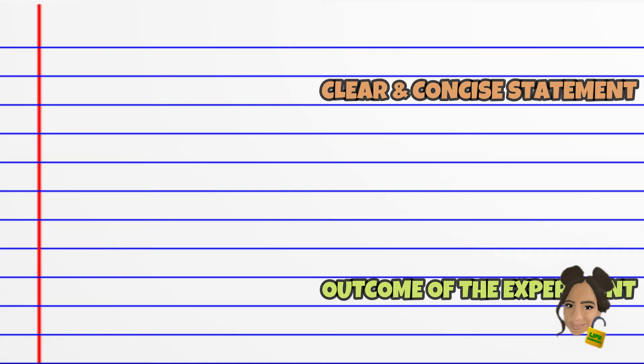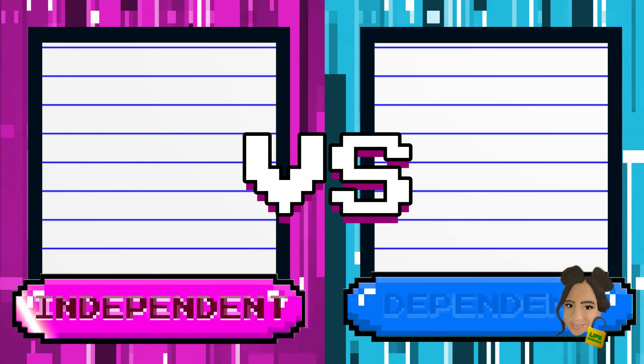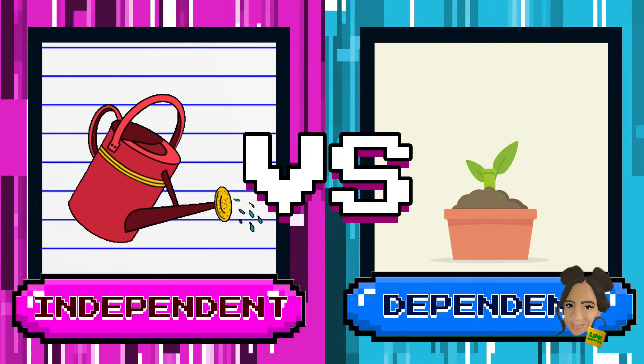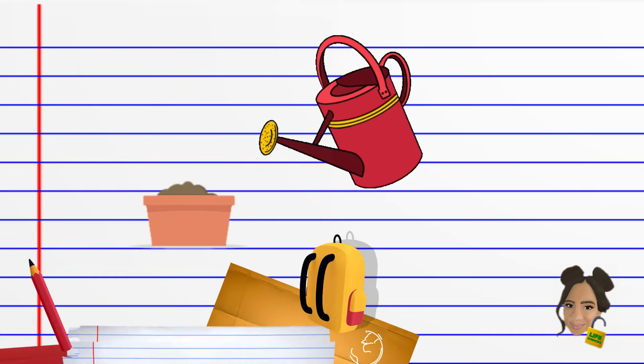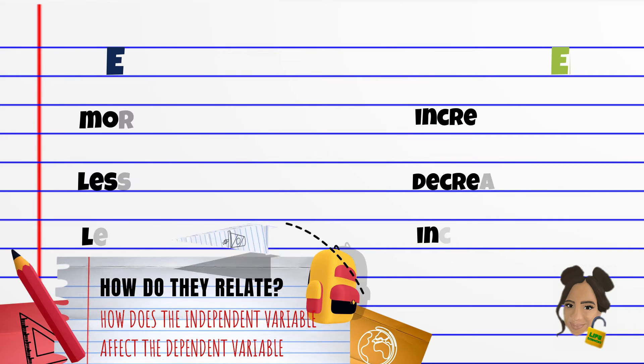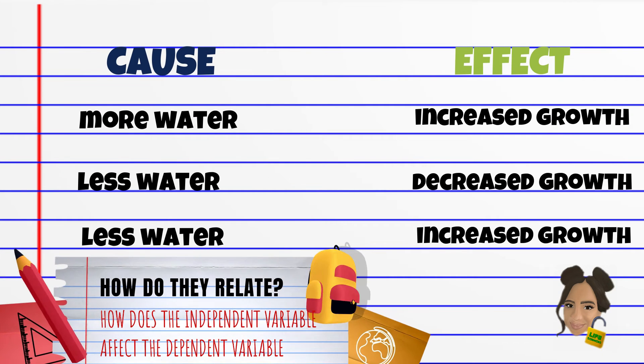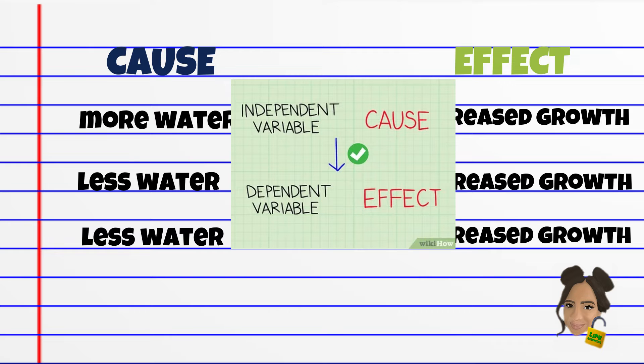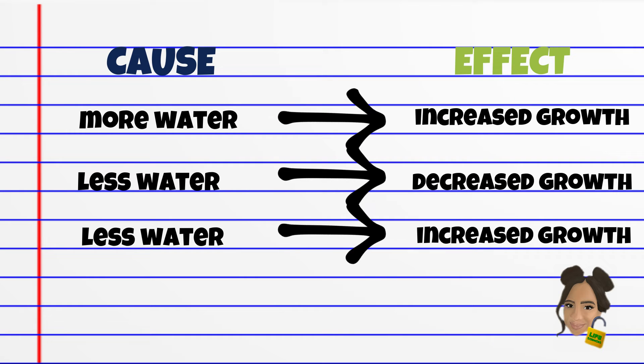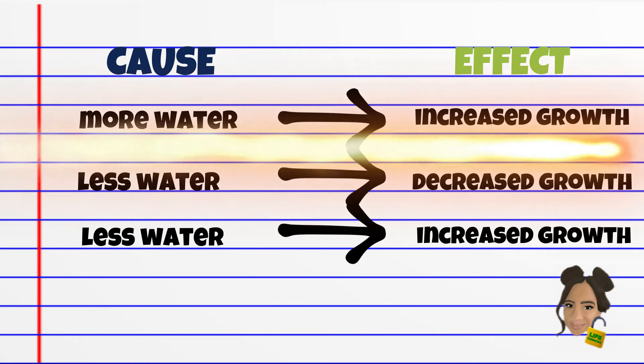Let's start by having a look at the relationship between the independent and dependent variable. What kind of impact does the amount of water given to a plant have on its growth or height? Upon quick examination of the relationships we've identified here, let's select the one we hypothesize to be the most correct.